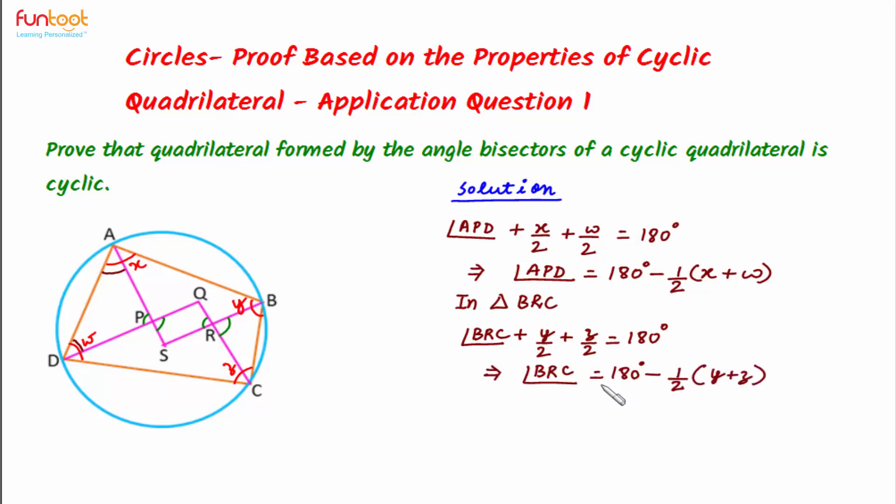So here we can find expression for angle BRC. Taking these two to the other side we will have 180 degrees minus 1 by 2 (Y plus Z).